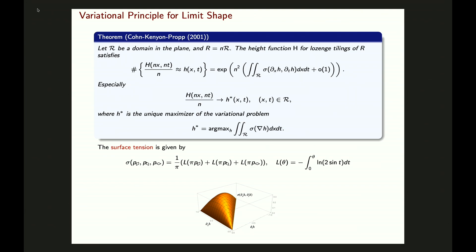The surface tension formula is given by (1/π) times the sum of the Lobachevsky function L applied to π times those local densities. For this talk we don't really need the full surface tension, but the key feature is it's defined on this triangle domain. In the interior of this triangle, the surface tension is strongly concave; on the boundary it's just linear but still concave.